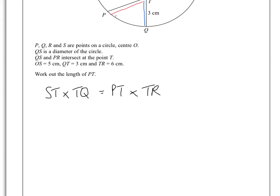So ST as we now know is 5 plus the 2, and that multiplied by TQ, which is 3, is equal to PT, which is what we're trying to work out, times by TR, which is 6.